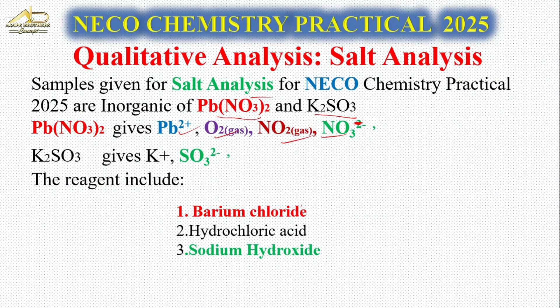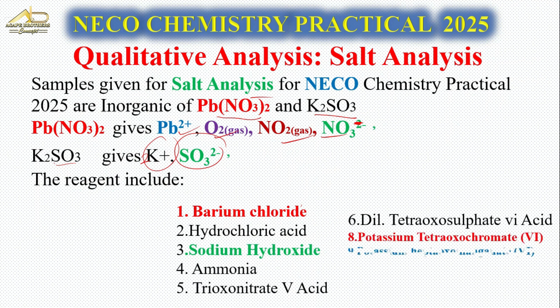Another salt given is K₂SO₄. You have two molecules of potassium here, and you can also have SO₃²⁻ as the ion. Depending on the reagent given, you'll be able to know what exactly you are testing for - Pb²⁺, O₂ gas, NO₂, NO₃⁻, and SO₃²⁻.